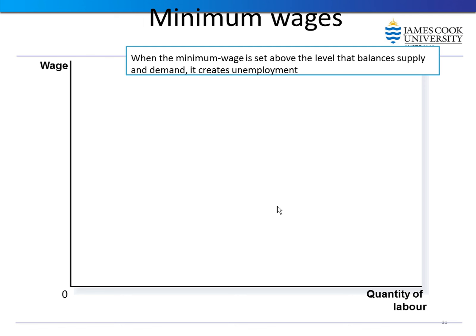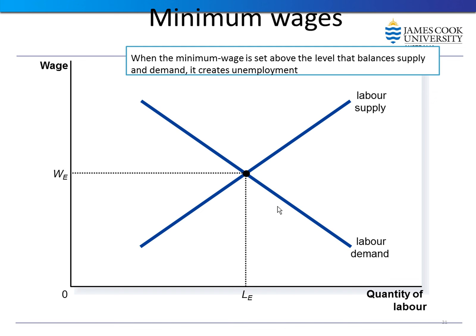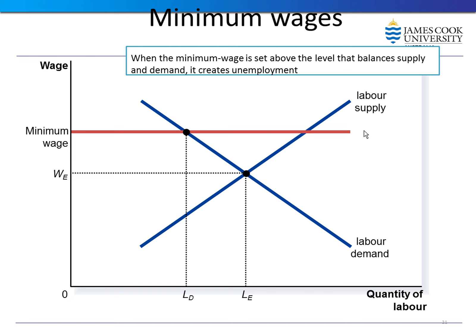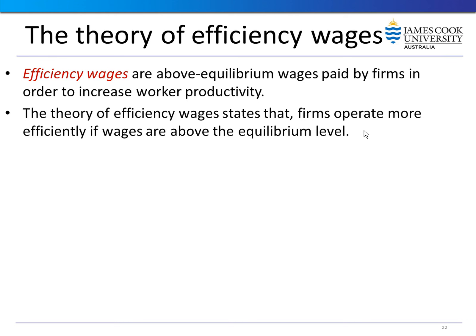Consider the labor market with wage on the vertical axis and quantity on the horizontal axis. If the market is ideal, supply equals demand, the wage rate is at equilibrium, and there is no unemployment. But suppose the government sets a minimum wage above the equilibrium — at this wage level, firms are willing to hire LD workers while workers are willing to supply LS workers, creating a labor surplus where people want to find jobs but cannot. These people are counted as unemployed.